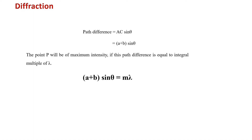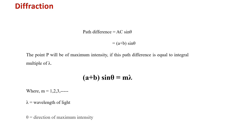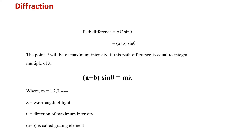The formula is modified as: a+b sin θ = mλ, where the path difference is m times λ. Here λ is the wavelength of light, and m is an integer representing the order of spectrum, which can be 1, 2, 3, and so on. θ is the angle of diffraction, which occurs due to the bending of light.